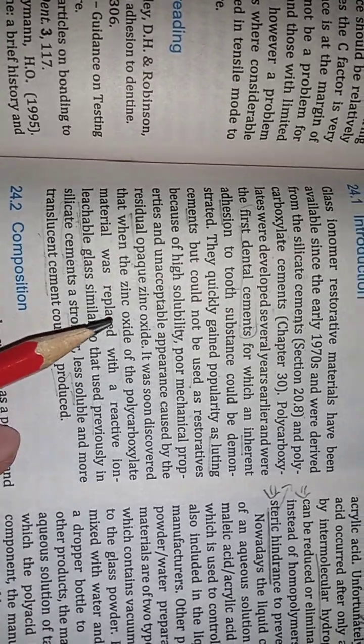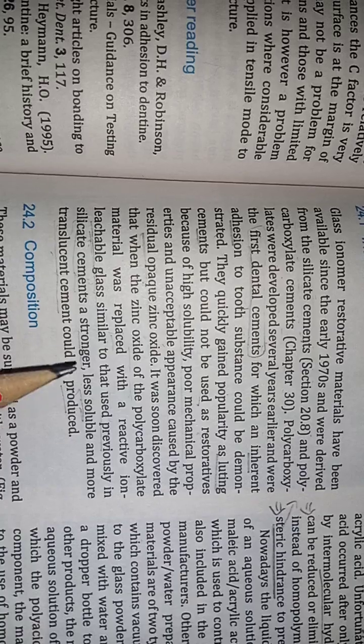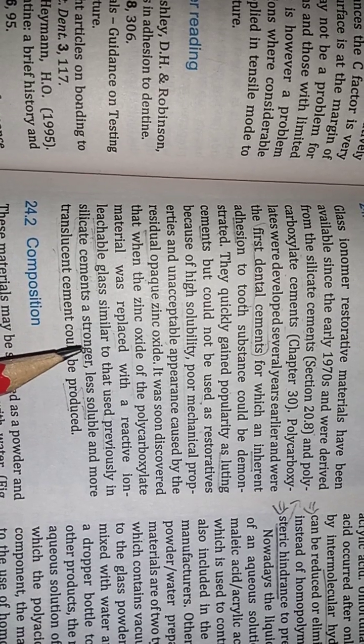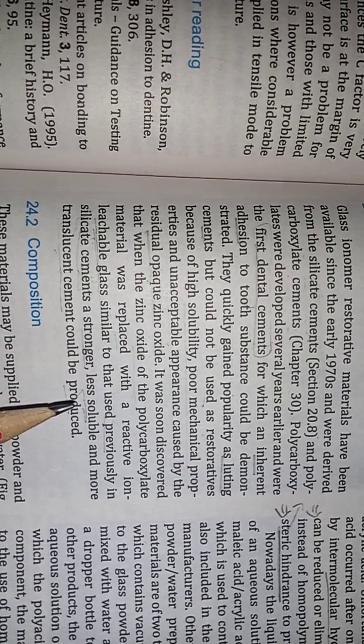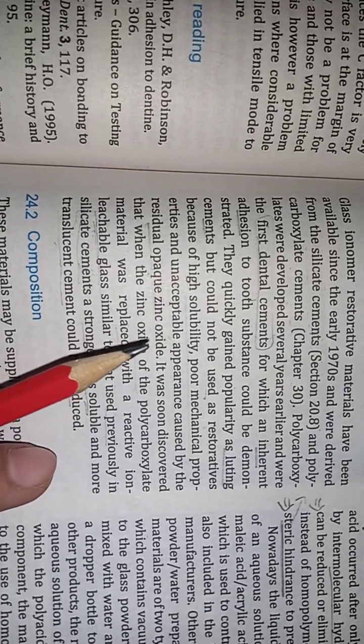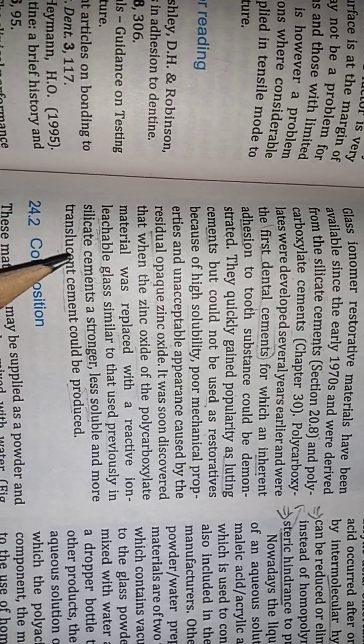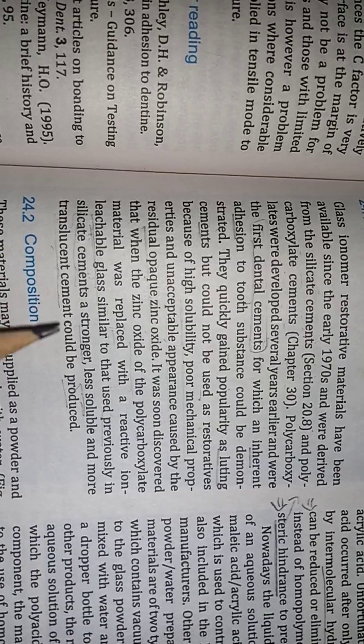It has good properties, which was first weak. It was stronger. High-soluble, then less-soluble. Then it was more translucent cement. It could be produced.